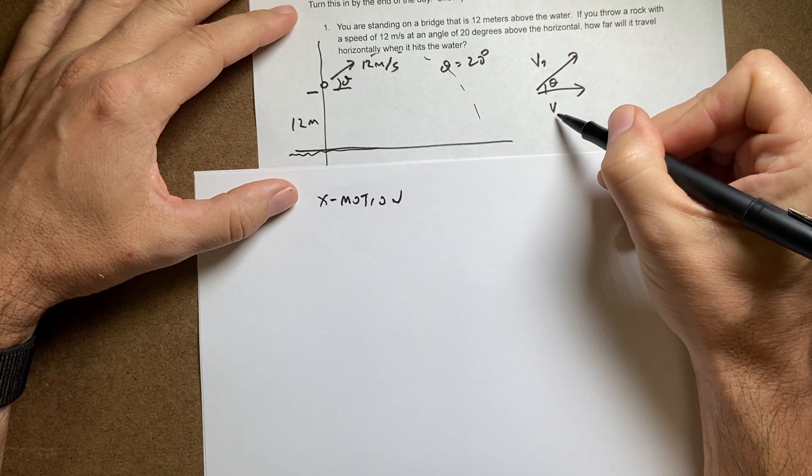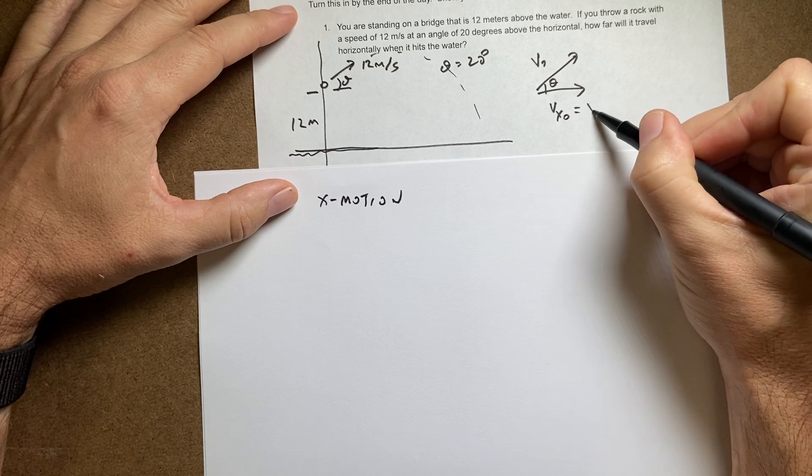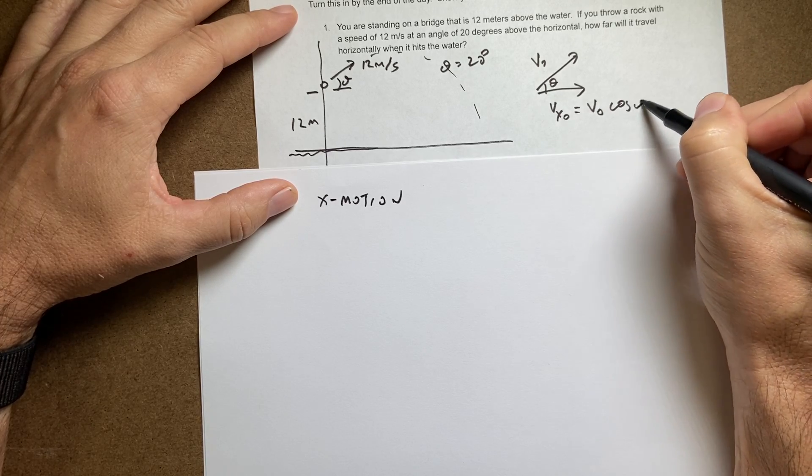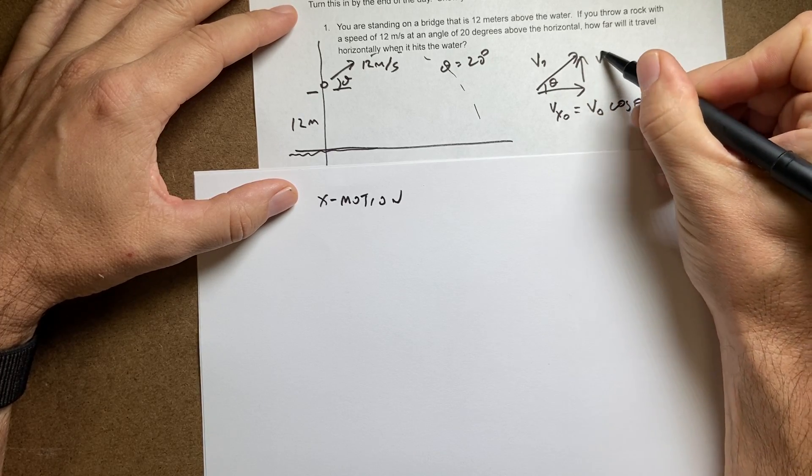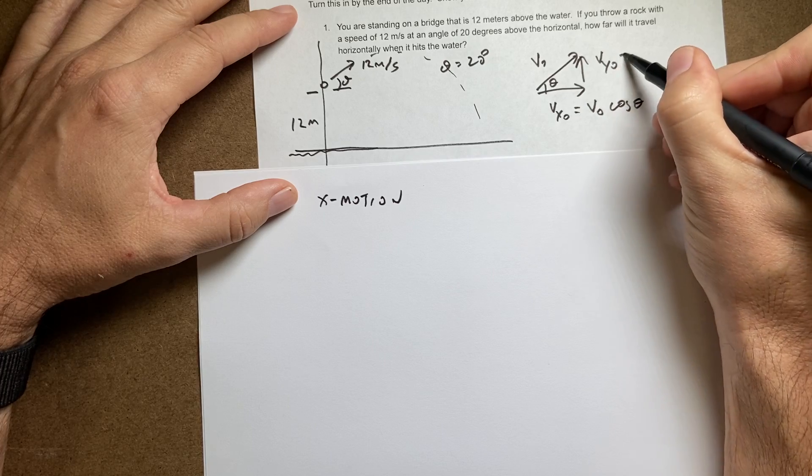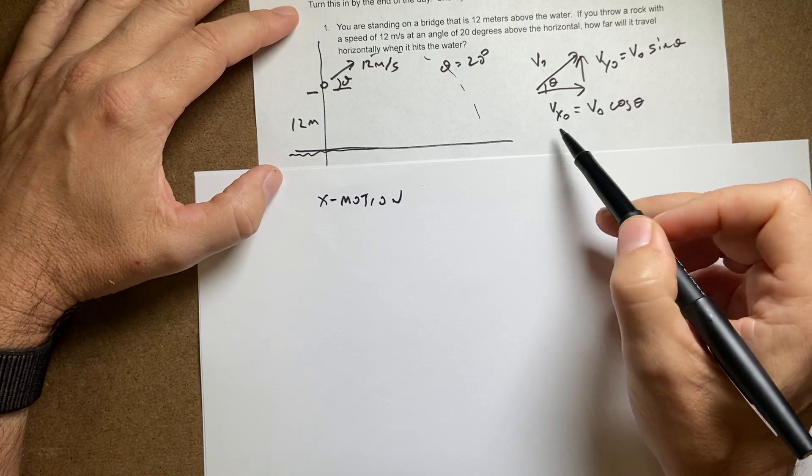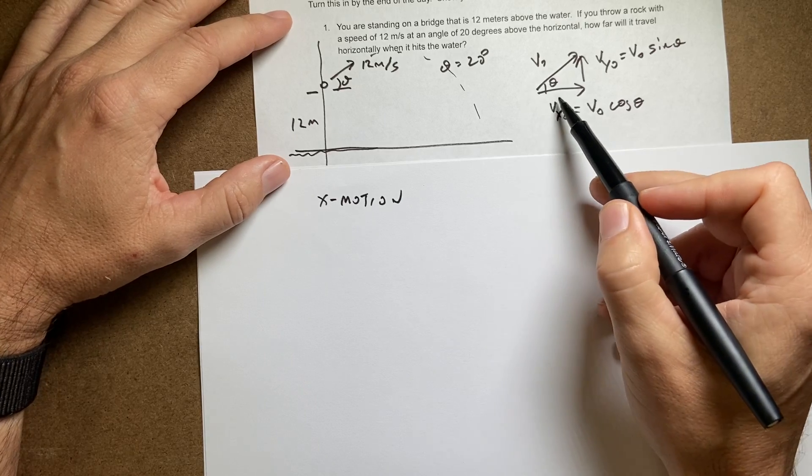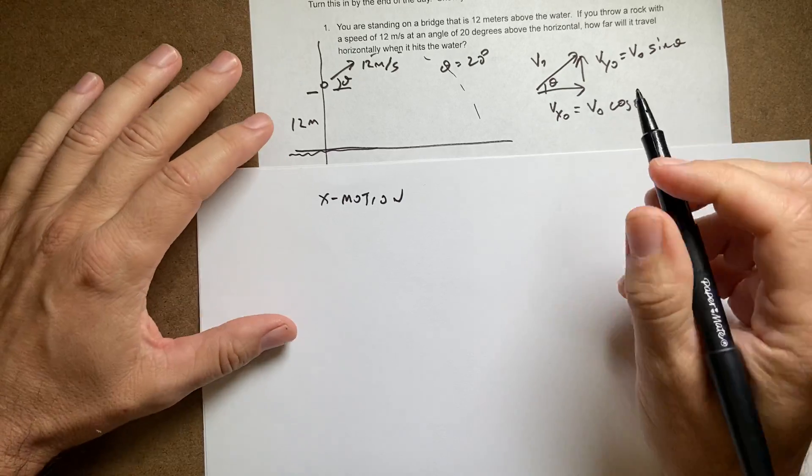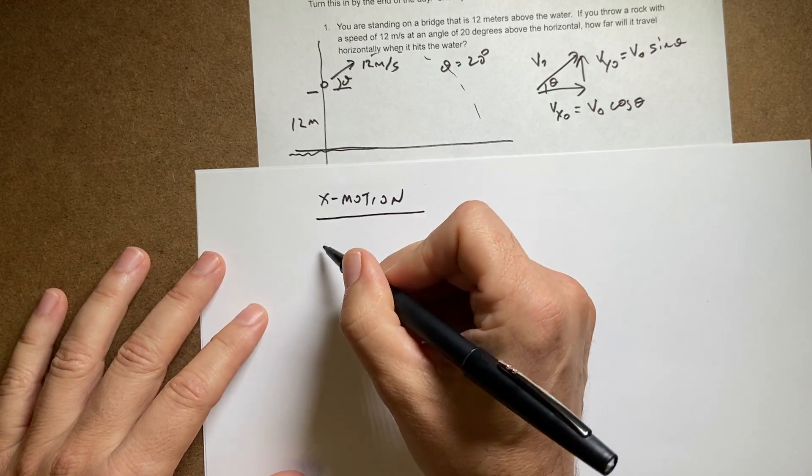If that is v zero and that's theta, then the initial x velocity is going to be v zero cosine theta. The initial y velocity, v y zero, is v zero sine theta, right? Because cosine is adjacent over hypotenuse. So solve for the x component. For the x motion, I have the following.